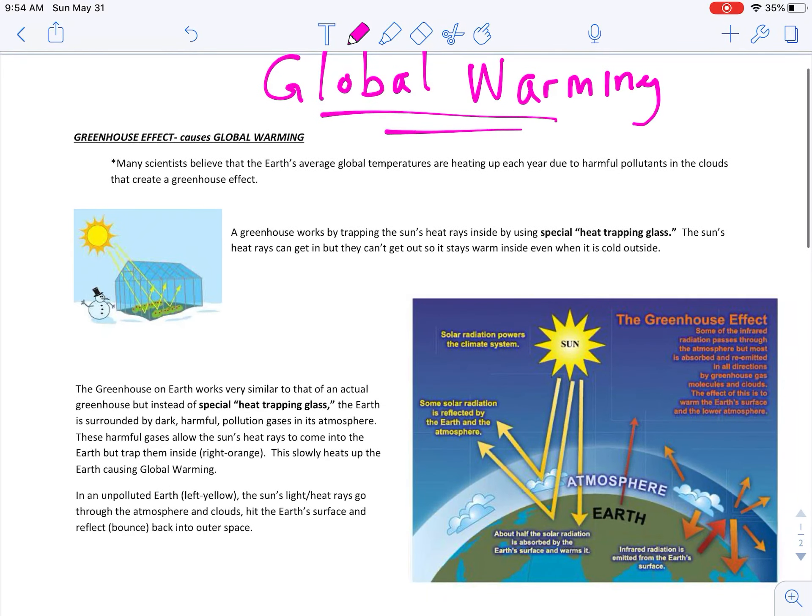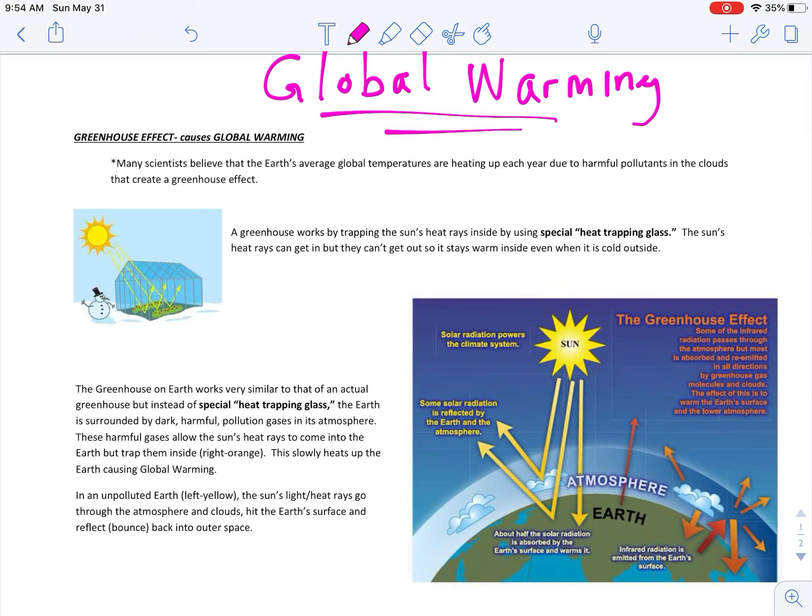So why does global warming occur? Well, first I want to explain how a greenhouse effect occurs because it's just like this. It's called a greenhouse effect that causes the global warming. So what is global warming and how does it occur? Let's start off. It says many scientists believe that the earth's average global temperatures are heating up each year due to harmful pollutants in the clouds that create a greenhouse effect.